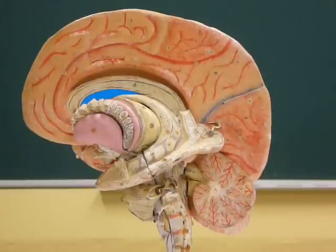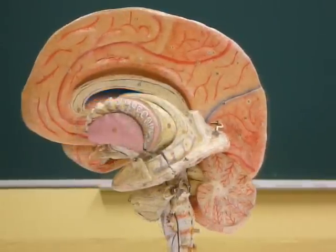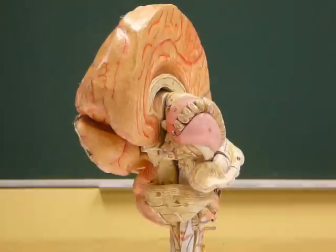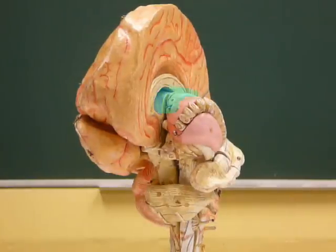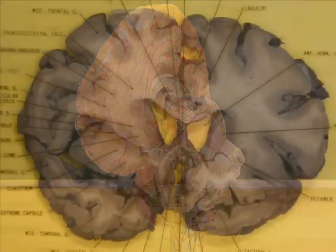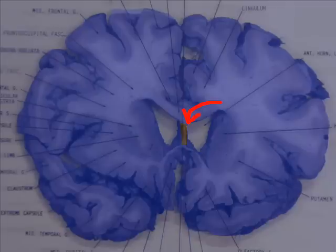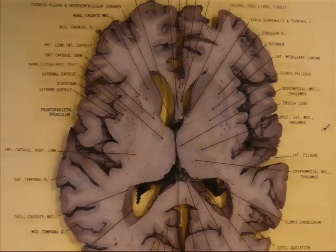The septum palisitum separates the front of the two lateral ventricles. If we look at the septum palisitum from a frontal cut, you will always see the two lateral ventricles, and the same with the horizontal cut.